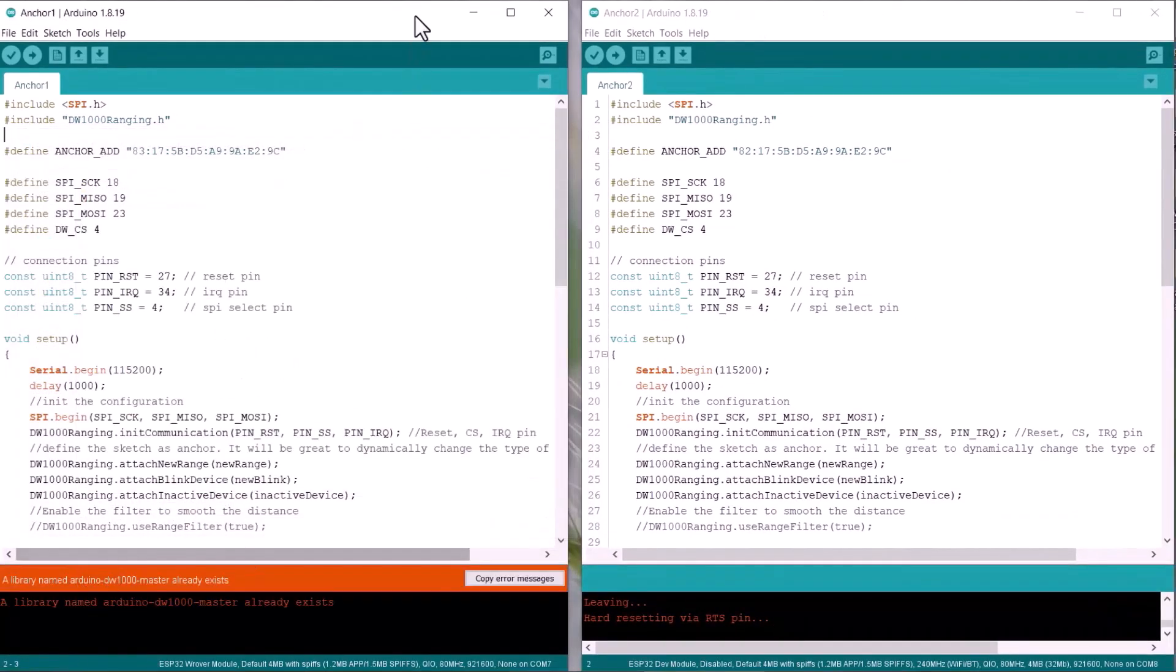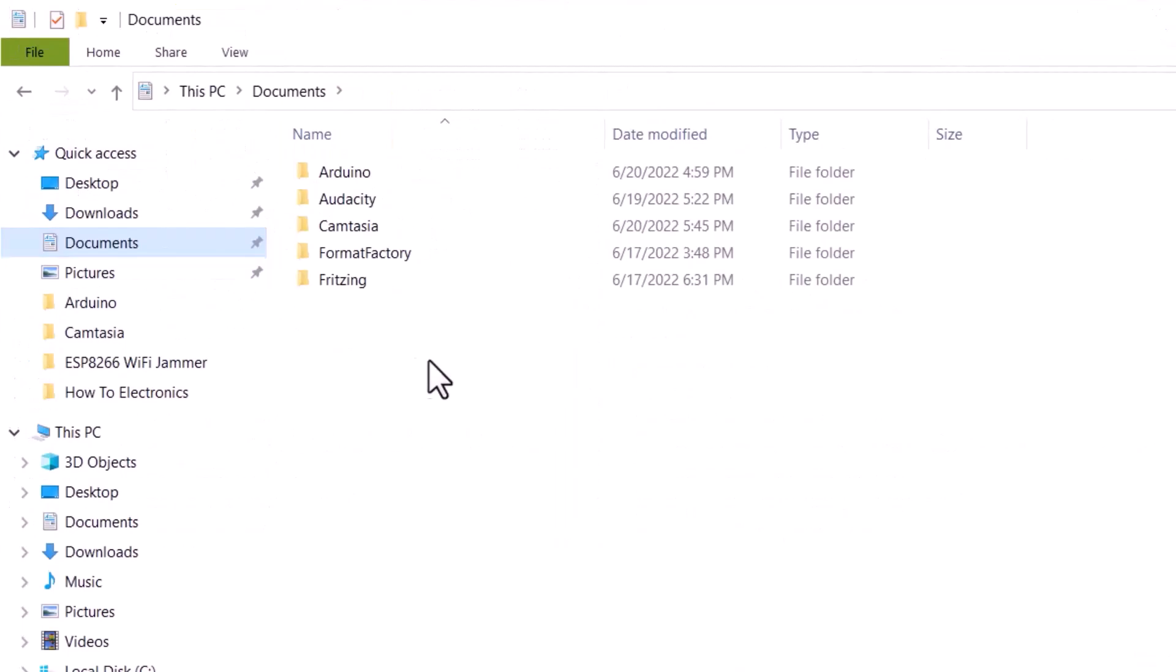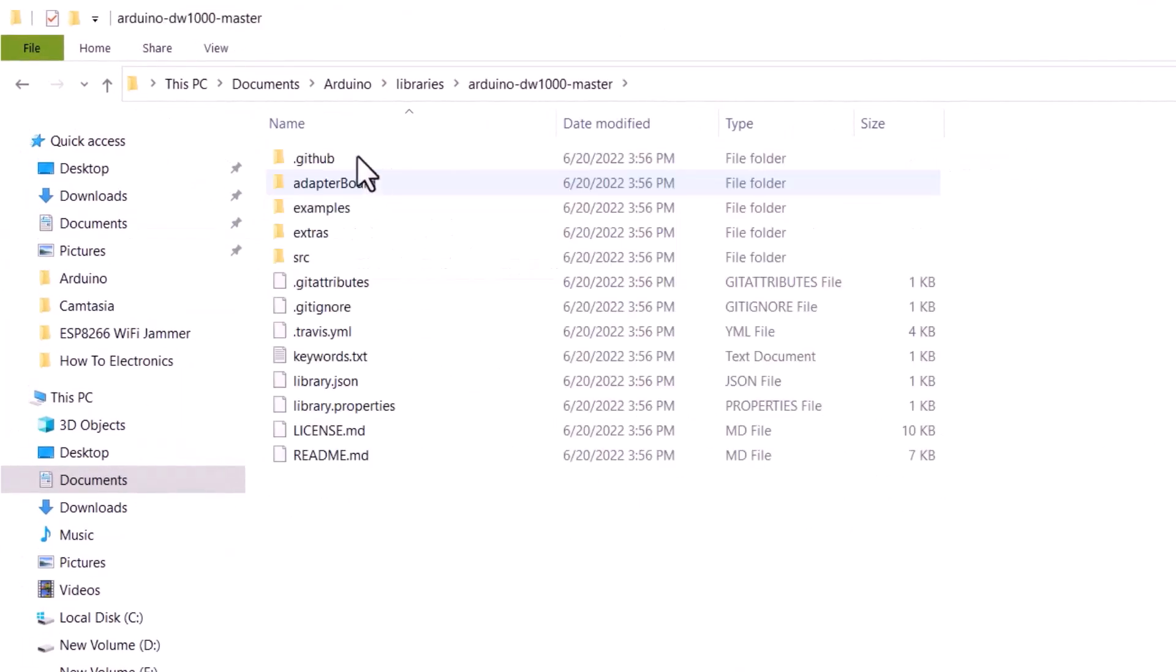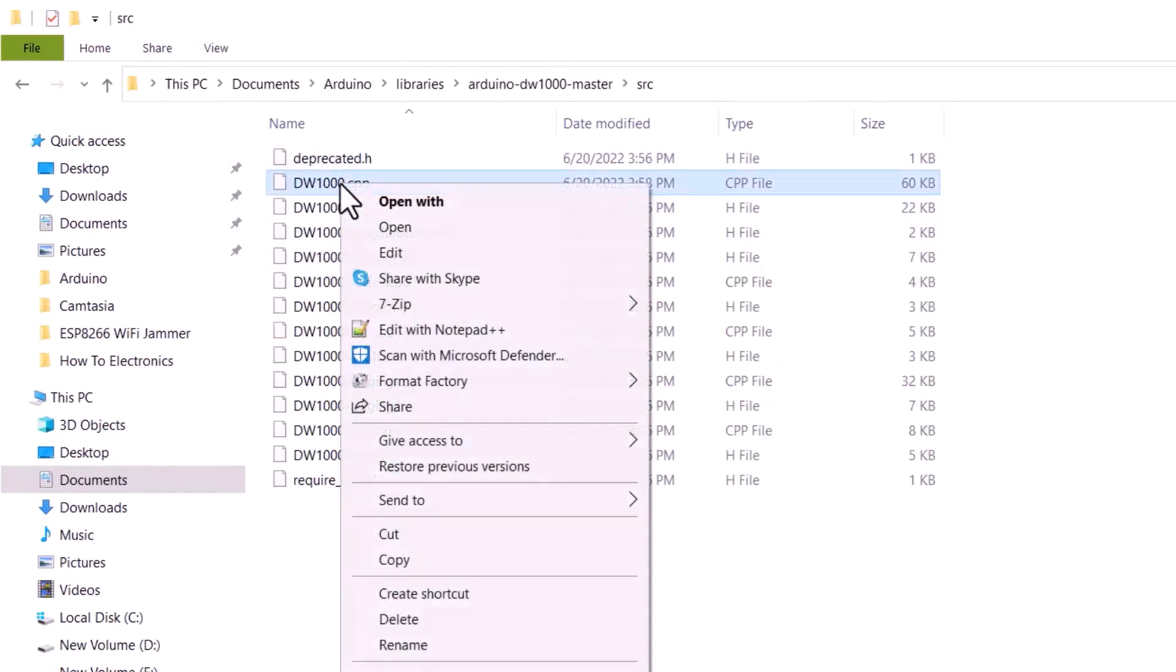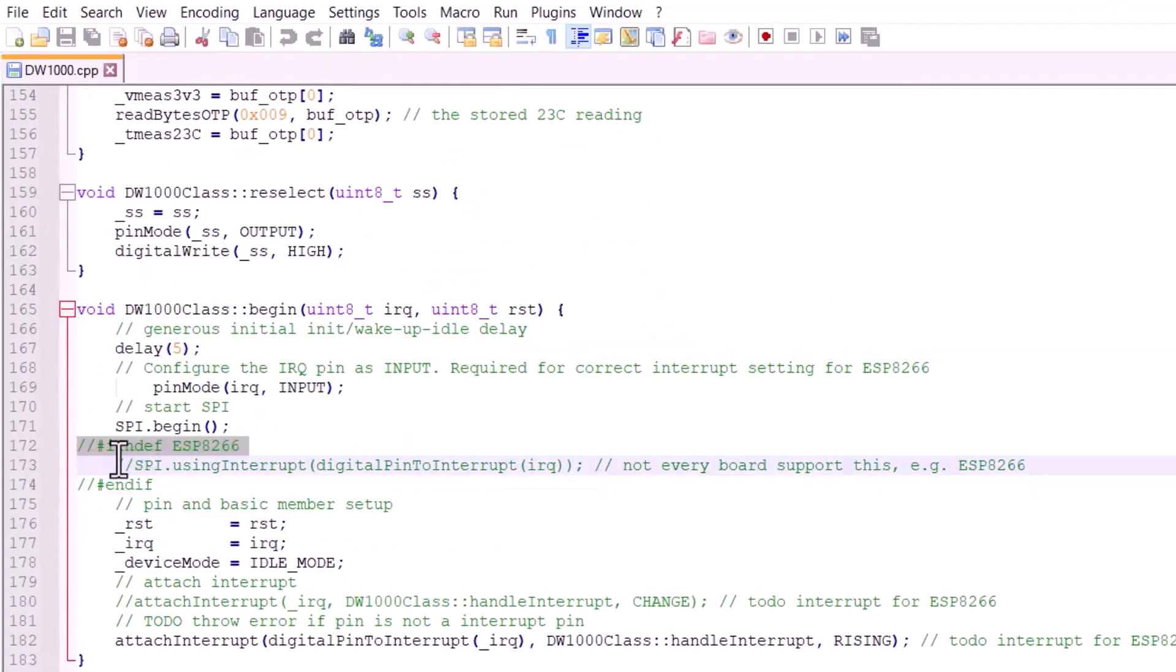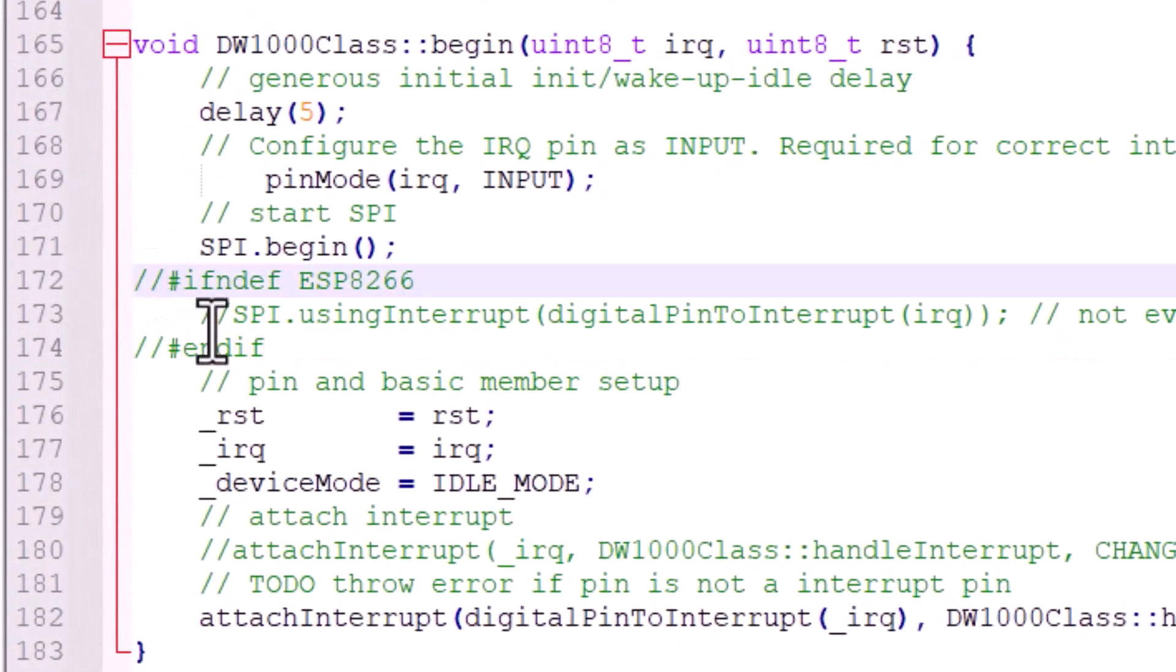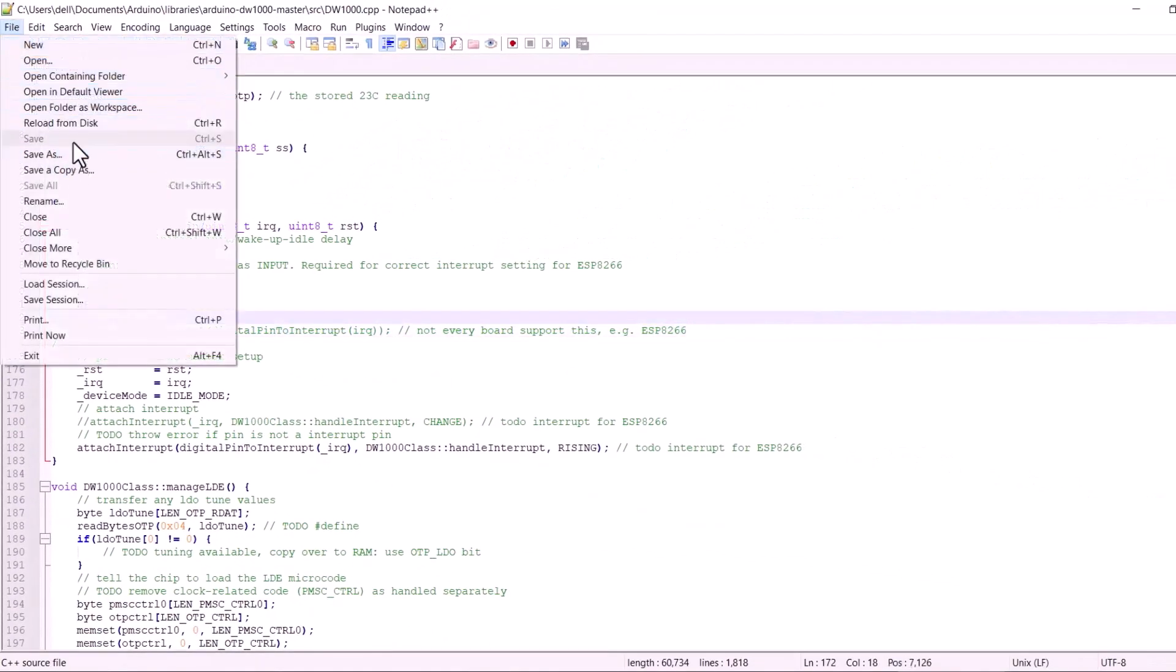The code will not compile now as we need to do some modification in the library. For that, look for the DW1000 library in the library folder. Then open the source folder. Here, you need to edit one file named DW1000.cpp. Open this file using Notepad++. Then go to line number 172. You need to comment lines 172, 173, and 174. Then save the file. That's it. Now, go back to the Arduino code.